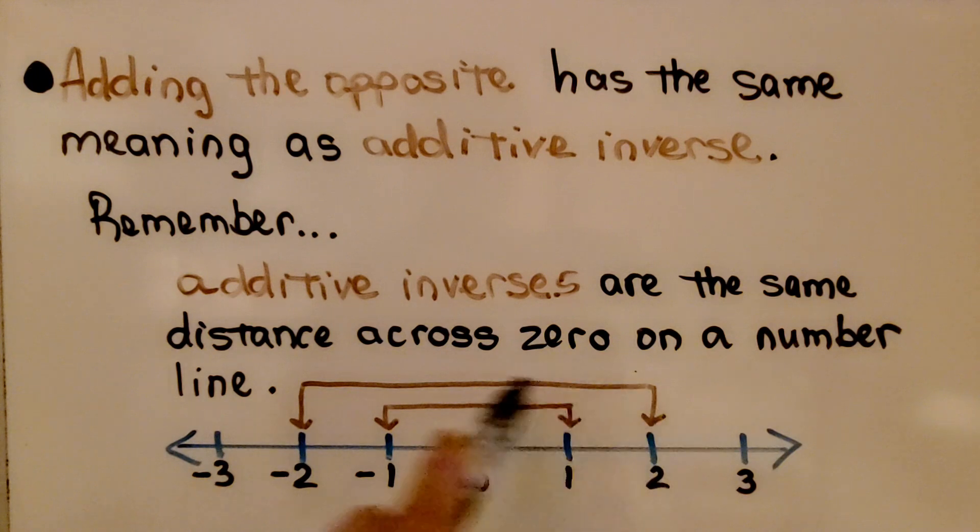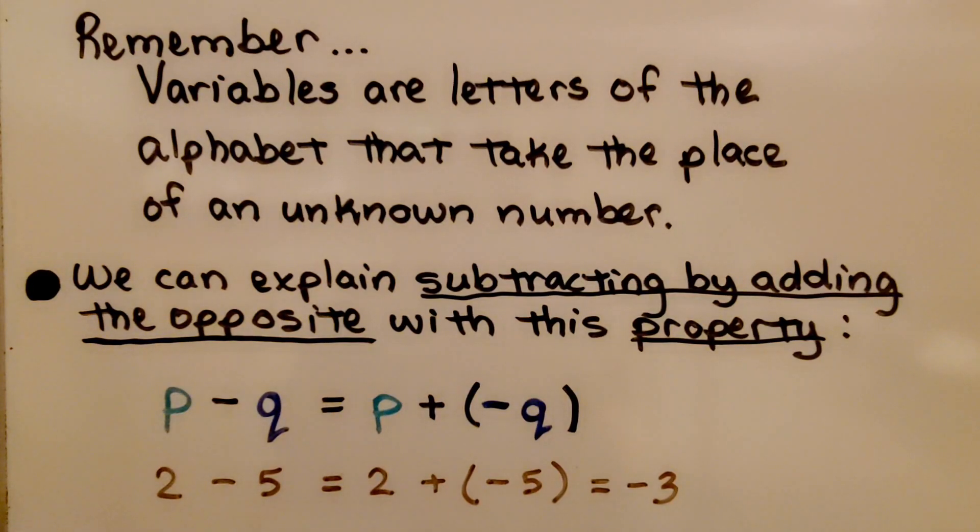So a positive 2 and a negative 2 are additive inverses. A positive 1 and a negative 1 are additive inverses. And remember, variables are letters of the alphabet that take the place of an unknown number.